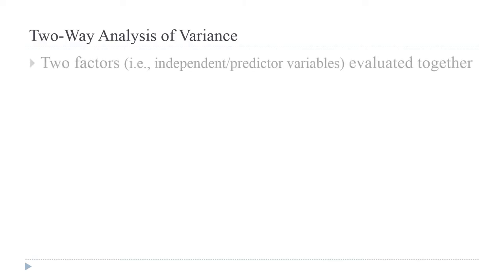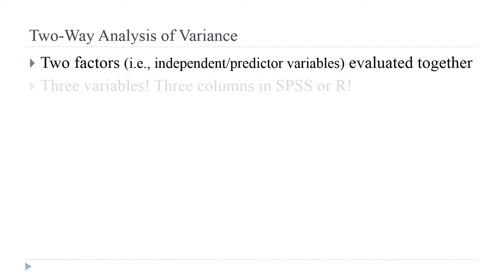The two-way analysis of variance is a situation where you have two factors — two independent or predictor variables evaluated together in the way that they influence your dependent or response variable. So you have two independent variables and one dependent variable.